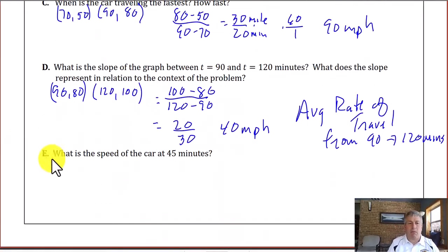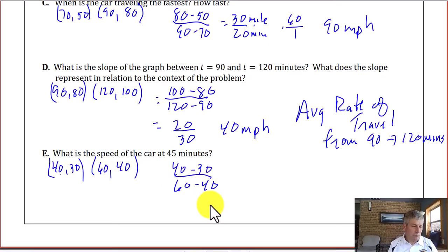We can use the ordered pair 40, 30 and 60, 40. So using those two ordered pairs, 40, 30 and 60, 40, 45 is included in there. So we can use that. So calculate our average rate of change. 40 minus 30 over 60 minus 40. And we get 10 over 20. We convert that to 60 minutes in one hour. And we get 30 miles per hour.